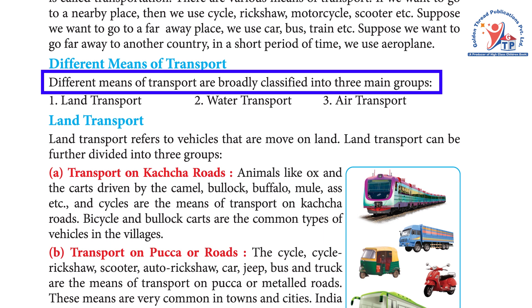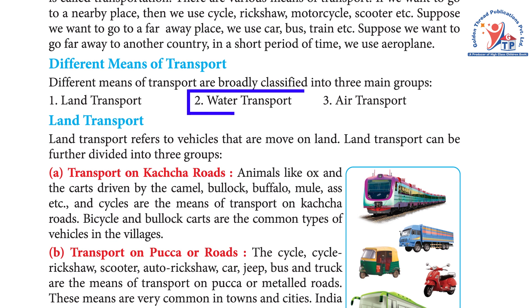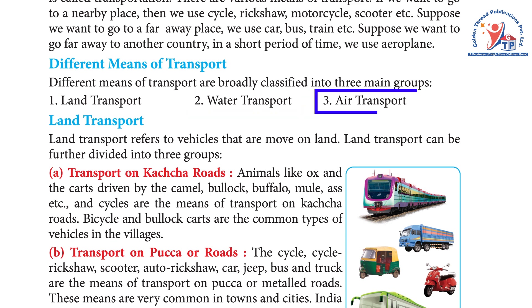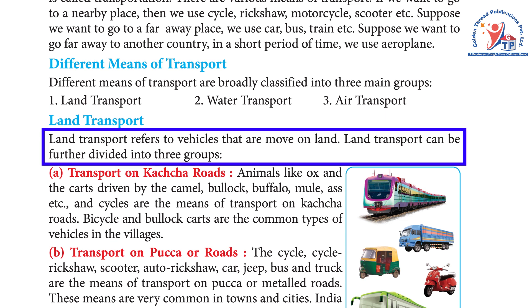Different means of transport are broadly classified into three main groups: one, land transport; two, water transport; three, air transport. Land transport refers to vehicles that move on land.